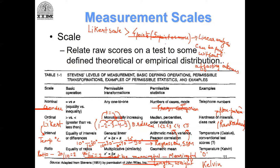Rajendra asks how do we quantify content validity — hold on to this question, as in our next session we are going to talk about scale development procedures and we'll address it then. On whether you can use an interval scale on AI-enabled research: it all depends on the kind of conceptualization and theory you are building, but yes it should be possible. You can have a Likert scale when developing your scale for AI.